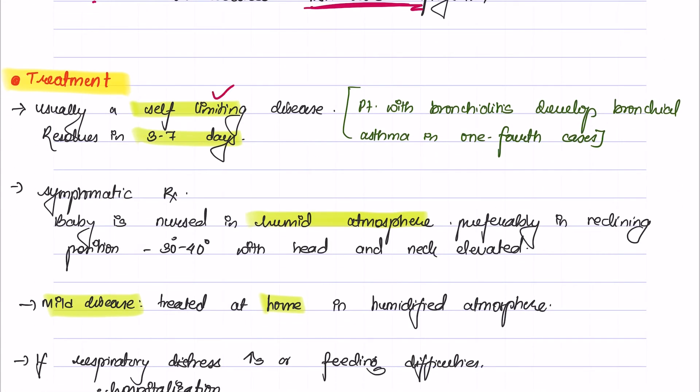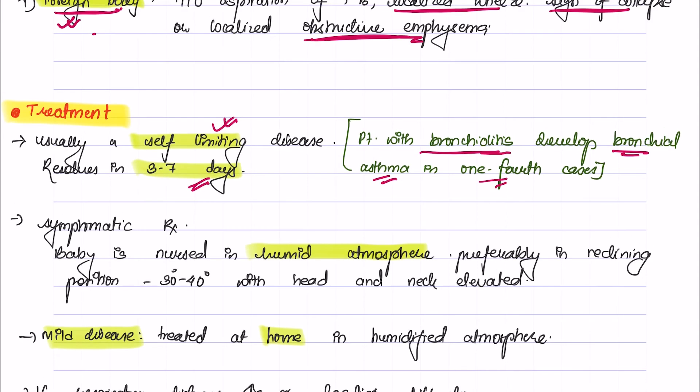Bronchiolitis is usually a self-limiting disease and it resolves in three to seven days. Patients with bronchiolitis have increased chance of developing bronchial asthma in one-fourth of the cases. For treatment, symptomatic treatment is done and the baby is nursed in humid atmosphere, preferably in a reclining position, that is 30 to 40 degrees with head and neck elevated.